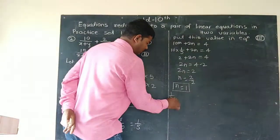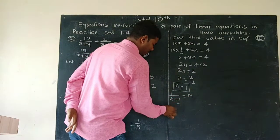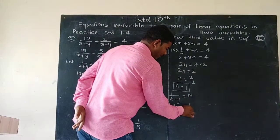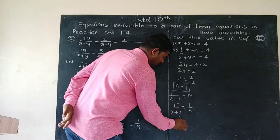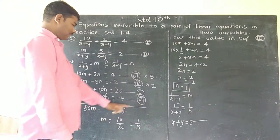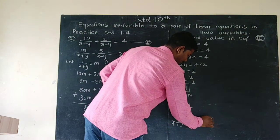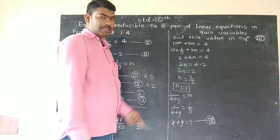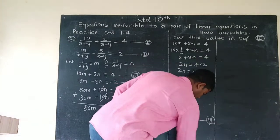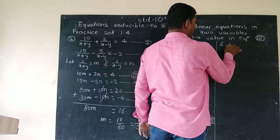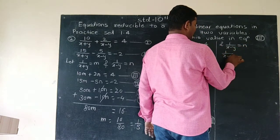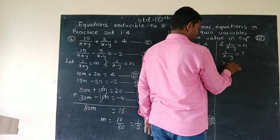Now we back-substitute. Since m equals 1 upon (x + y) and m equals 1 upon 5, we get x plus y equals 5. Since n equals 1 upon (x - y) and n equals 1, we get x minus y equals 1. These are equations 7 and 8.